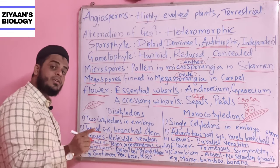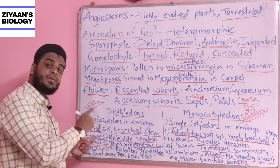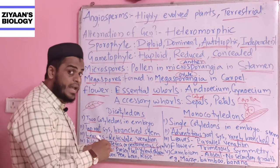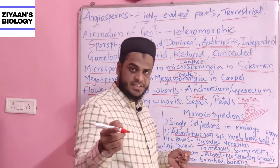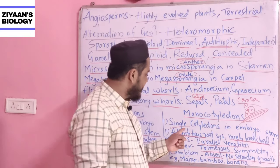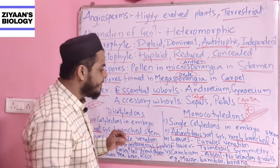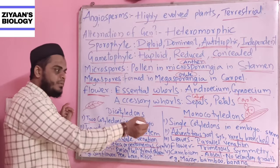To summarize: in dicotyledons, secondary growth is present because cambium rings are present. In monocotyledons, there are no cambium rings, so no secondary growth.